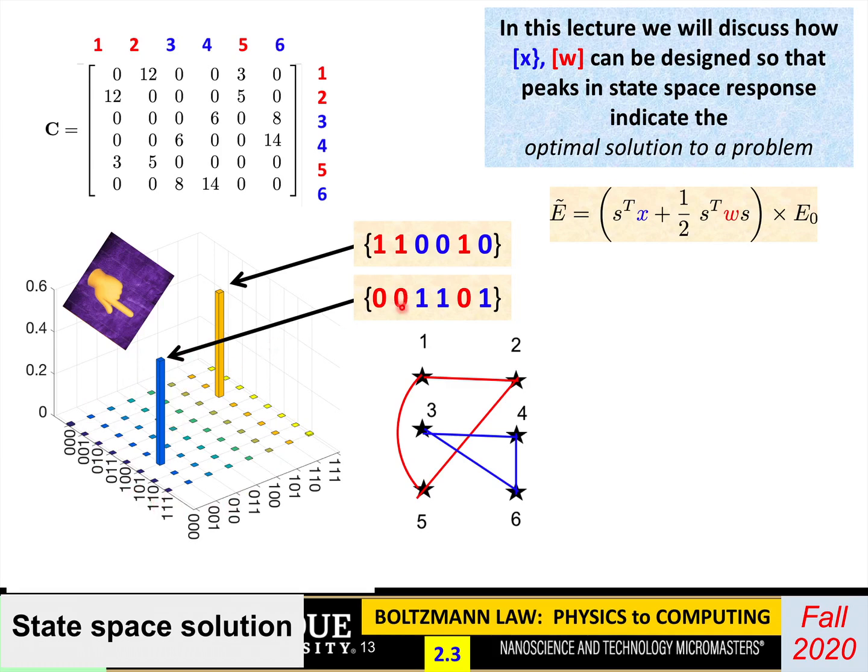So what you'd like is the state-space response to look something like this. You have two peaks at these two values. There's six neurons, so in terms of configurations, there are 2 to the 6 of them, which is like 64. I've drawn this picture as eight numbers on this side and eight numbers on this side. This peak is like 0, 0, 1, 1, 0, 1. That's this peak. This one is like 1, 1, 0, and then 0, 1, 0. That's this other peak. So this is the solution you're looking for.